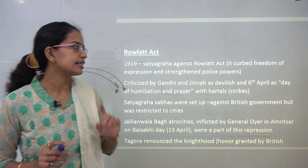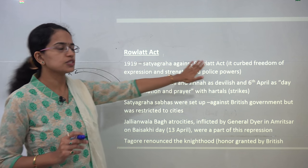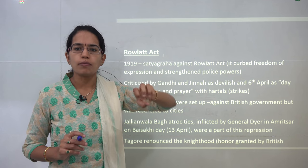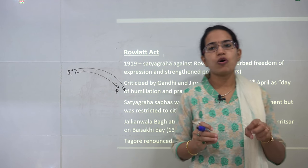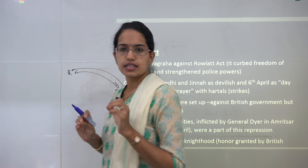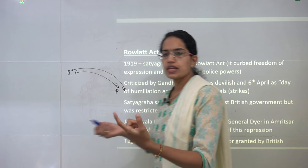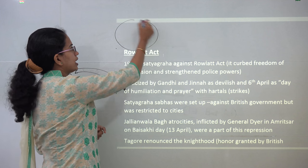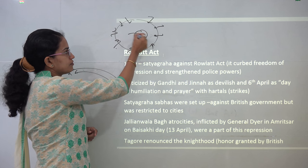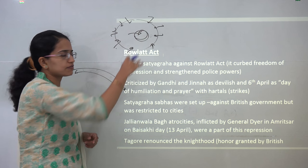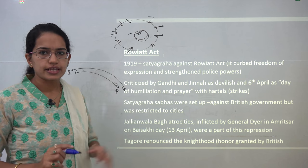During that time the Rowlatt Act was passed in 1919. This act brought about a curb on freedom of speech and expression, strengthened by political powers. As a result there was a big public demonstration held in Jallianwala Bagh in Amritsar. When people gathered to demonstrate against the Rowlatt Act, they were surrounded by General Dyer. The whole garden was surrounded by the army and a firing took place. Many people fell into a well in the ground raising slogans, and those who remained were brought down by the firing carried out by General Dyer.